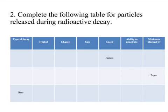To complete the following table, you have to look at the clues provided. The first type of decay, notice it said the speed is the fastest. That is indicative of gamma decay. And the symbol for gamma is the gamma symbol.